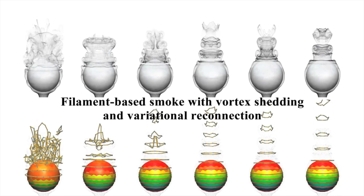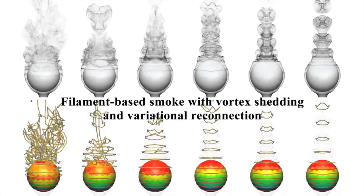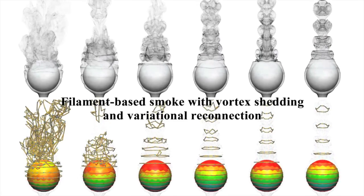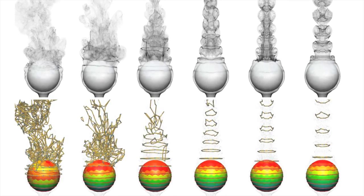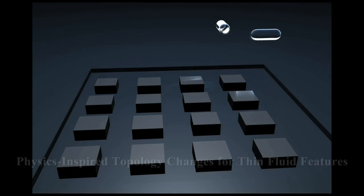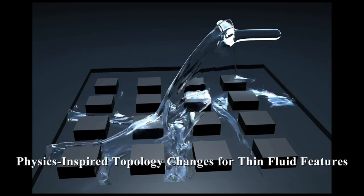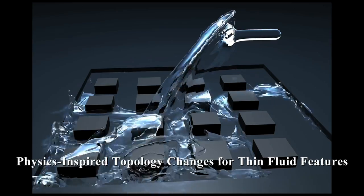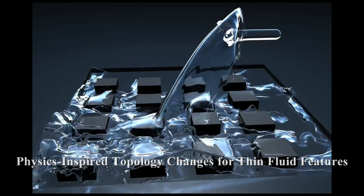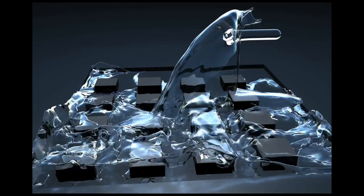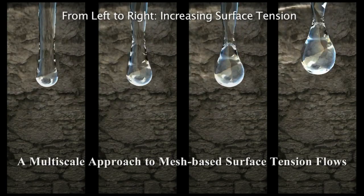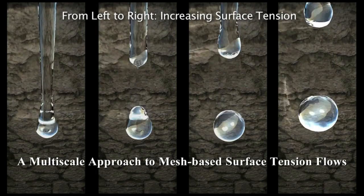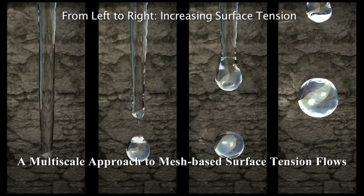Vortex filaments provide artists with a natural control for simulating smoke. A surface tracking method for fluids preserves fine details, adjusting topology even for thin features like sheets and strands. And this paper efficiently simulates fluids with strong surface tension.